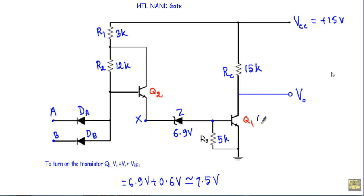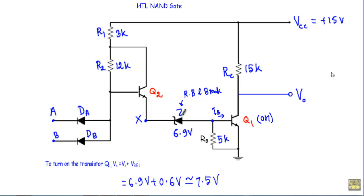To turn on transistor Q1, we must get a base current IB. For base current to flow into the base terminal of Q1, current must flow from this terminal towards the base terminal. That means the Zener diode must be in reverse bias and operated in the breakdown region, so that the applied voltage between this terminal and this terminal is greater than 6.9V.